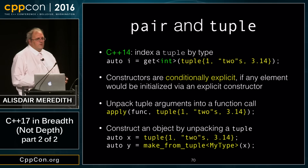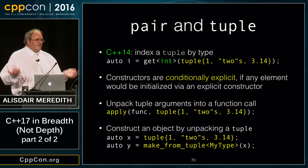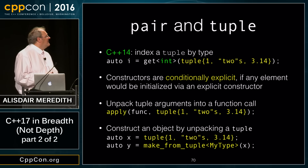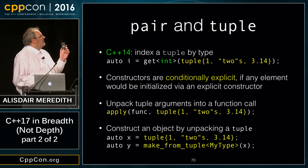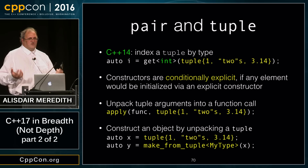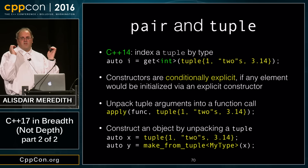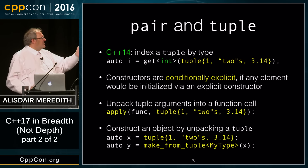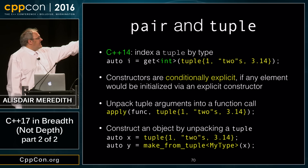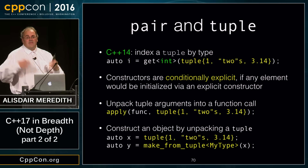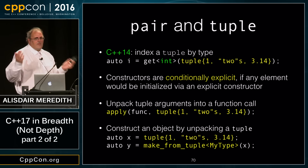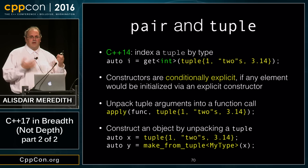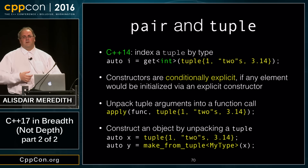For pair and tuple: C++14 added the ability to retrieve an item with get<type> rather than get<index>. So with a tuple of int, string, and double, calling get<int> retrieves the int. If there are two ints it would be ambiguous and fail to compile.